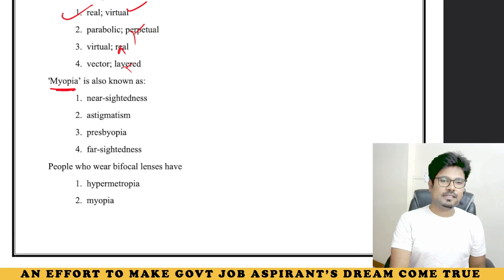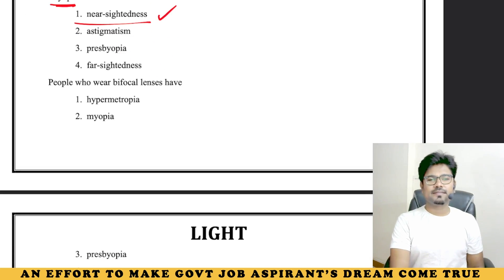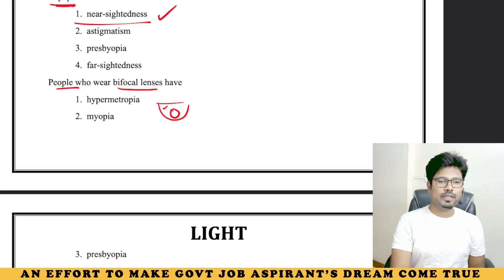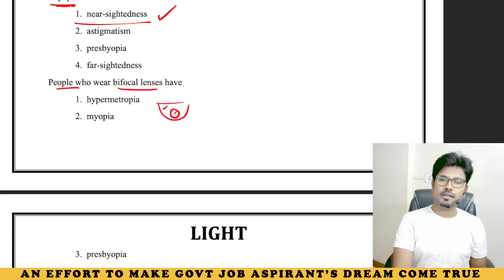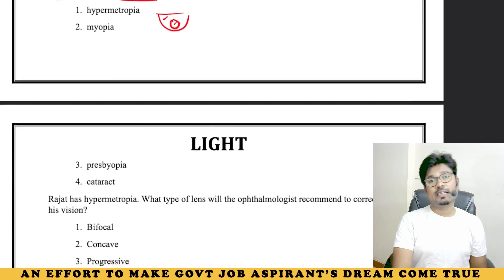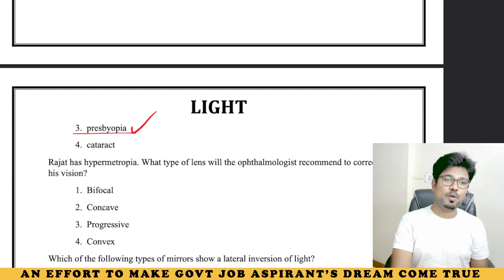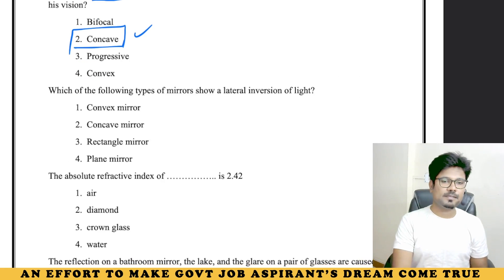Myopia is known as nearsightedness — this is from Lucent Physics. People who wear bifocal lenses — bifocal lenses have two different glass lenses combined, for two different purposes. This is derived from Lucent Physics. The condition requiring bifocal lenses is presbyopia. This involves spherical lenses.